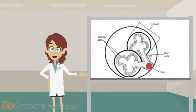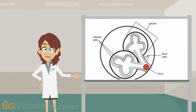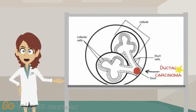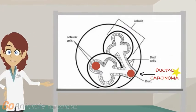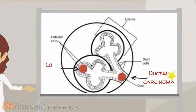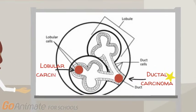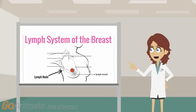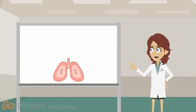If the cancer starts in cells that line the ducts in the breast, this is called ductal carcinoma, which is the most common type. Whereas if the cancer starts in cells of the lobules, it is called lobular carcinoma. Both can become malignant and spread to other parts of the breast, or even to the lymph nodes, which allow the cancer to spread to other parts of the body, such as the lungs and the brain.